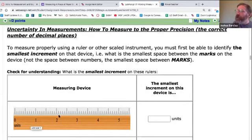It's the tenths. You see, here's one, here's two, here's three. The smallest increment, that means the smallest marks, is 0.1 units. This is just the first step in figuring out how to measure with this.